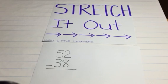This method of subtraction with regrouping is called the stretch it out method. So if we have the subtraction problem of 52 minus 38,